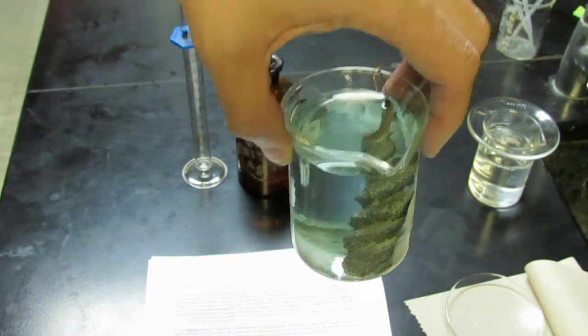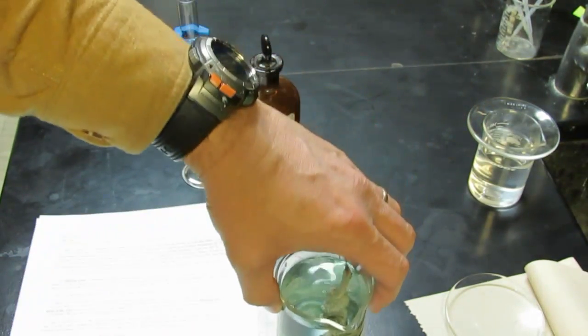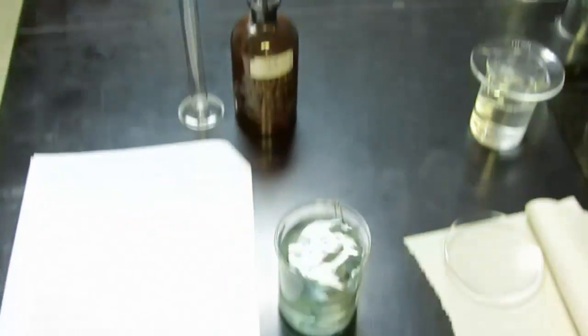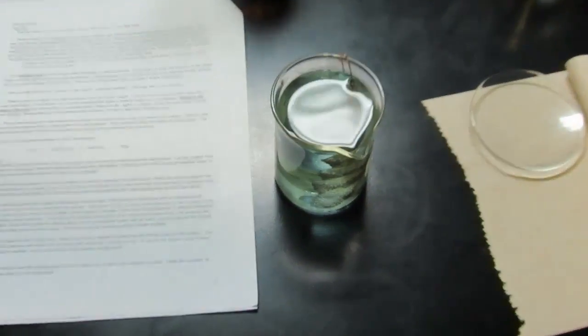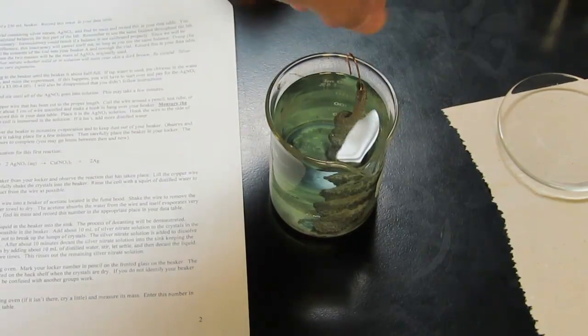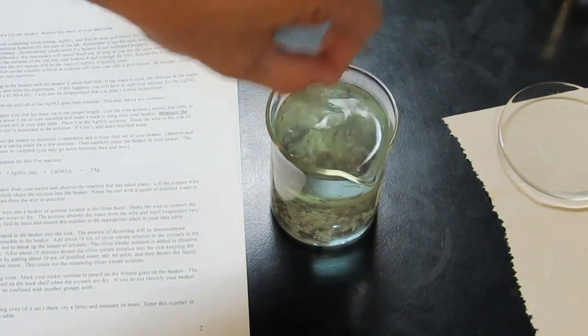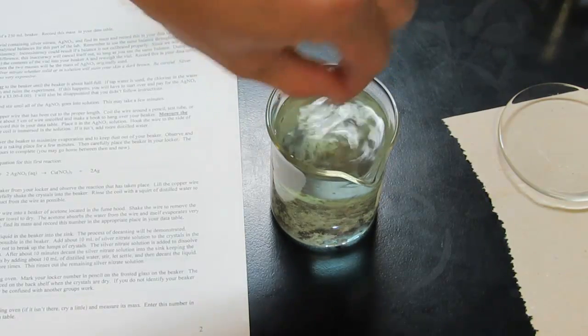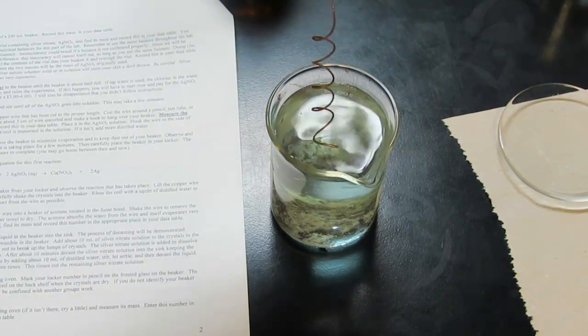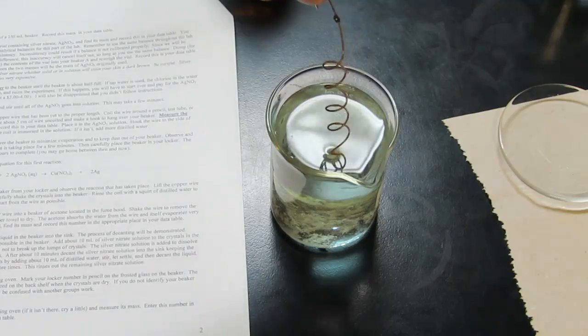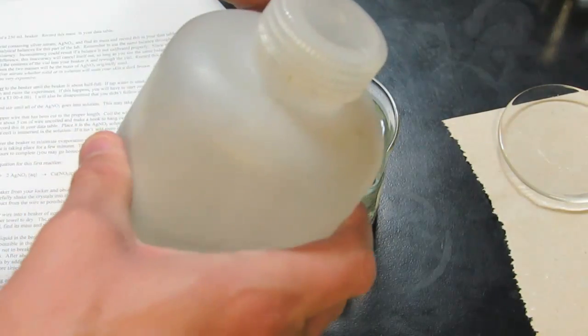Now what we're going to do is shake that silver off of our copper wire as well as we can. So we'll pick up our copper wire and give it a good shake. We'll get as much of that off as we can. That copper wire is bare. We're going to rinse this copper wire off with a squirt of distilled water.